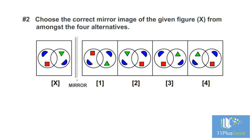Number 2 – Choose the correct mirror image of the given figure from amongst the four alternatives. This half circle is at the bottom closest to the mirror. In the image it must be closest to the mirror and at the bottom. We can eliminate diagram 3. The triangle must be in the circle closest to the mirror. We can eliminate diagram 1. The triangle points downwards in the original figure. In the image it must also point downwards. We can eliminate diagram 4 because the triangle points upwards. The correct answer is diagram 2.